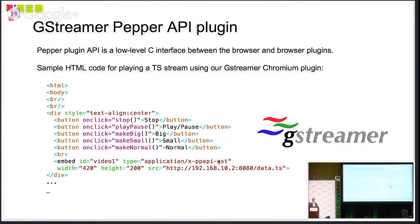So instead of that, we decided to go with a similar path to how the Flash player is integrated in Chromium — through an API called Pepper API. The Pepper API in Chromium is a low-level C API to which you can plug in low-level plugins, like the CDM. We created a new plugin based on GStreamer using that approach.